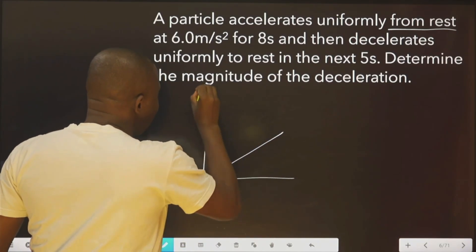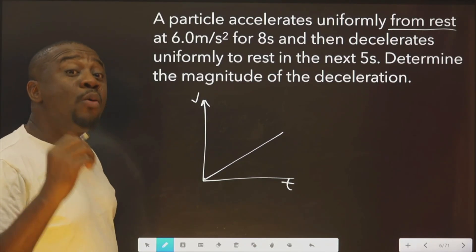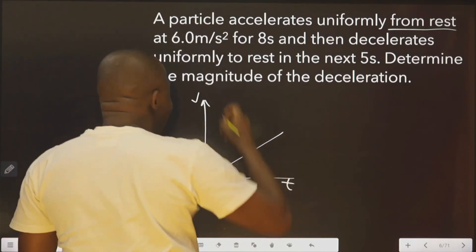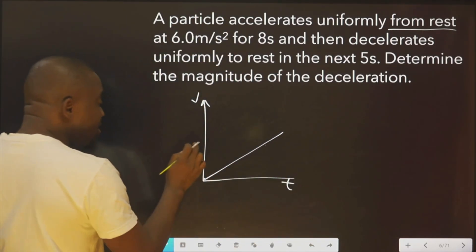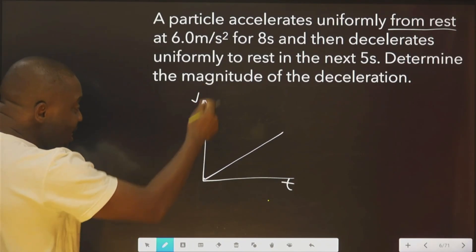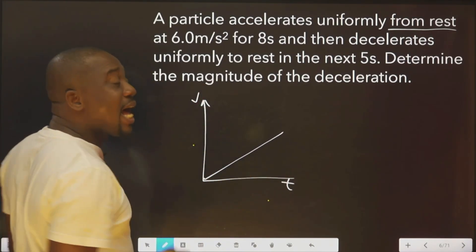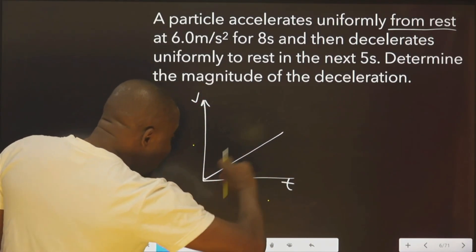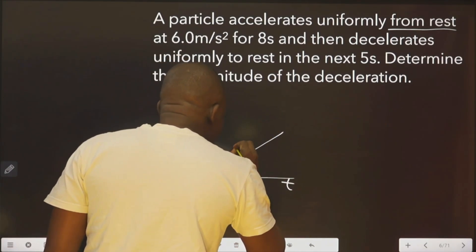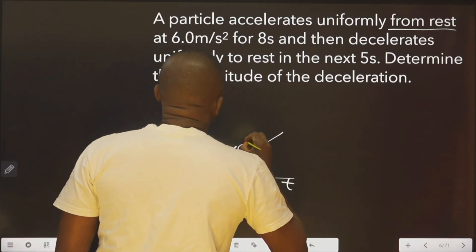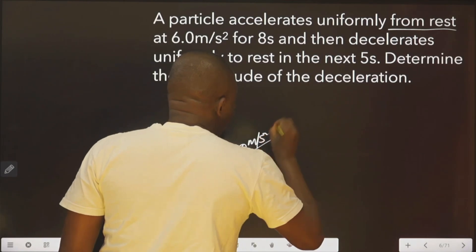So we label it: this is V, this is T. I will write the values on the graph — not on the velocity line, not on the time line, because this is the acceleration line. That is 6.0 meter per second squared.